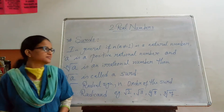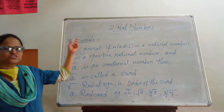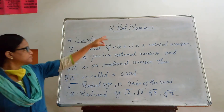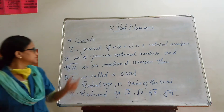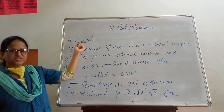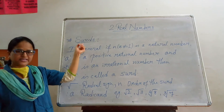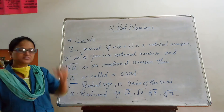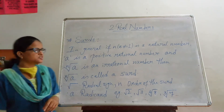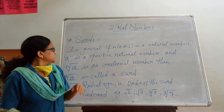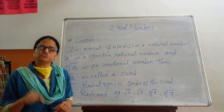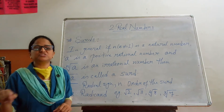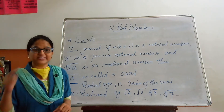Hello children. Next topic from chapter number 2, real numbers. Next topic is surds. Surds means: an irrational root of a positive rational number is called a surd.